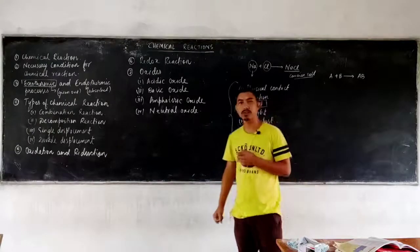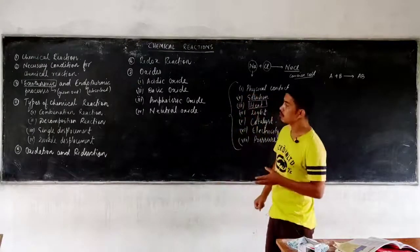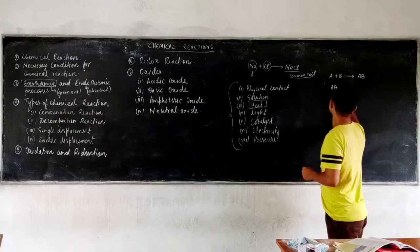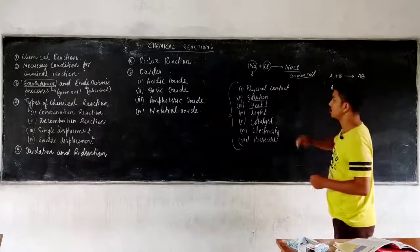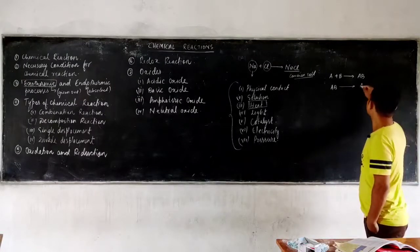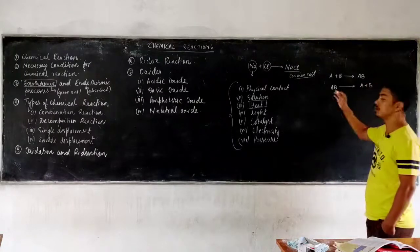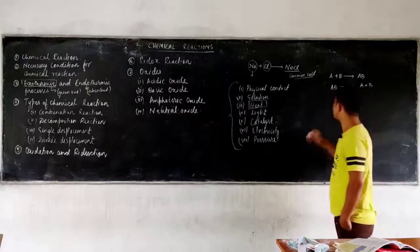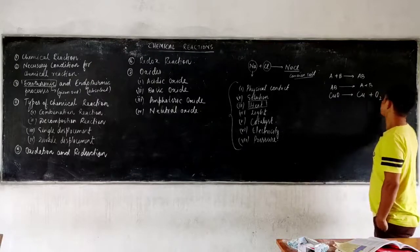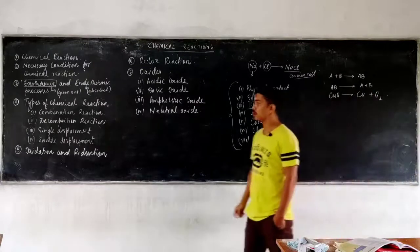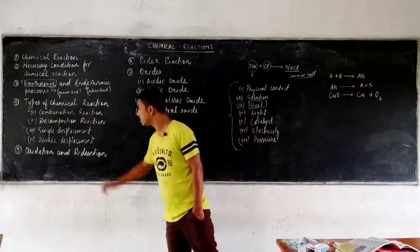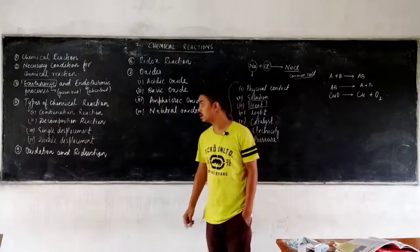The second type is decomposition reaction, which is the opposite of combination. Here, one compound — when heated, when light energy falls on it, or when electric current is passed through it — breaks into two or more constituent elements. For example, copper oxide when strongly heated forms copper and oxygen. Such reactions where a single compound breaks into two or more products are known as decomposition reactions.